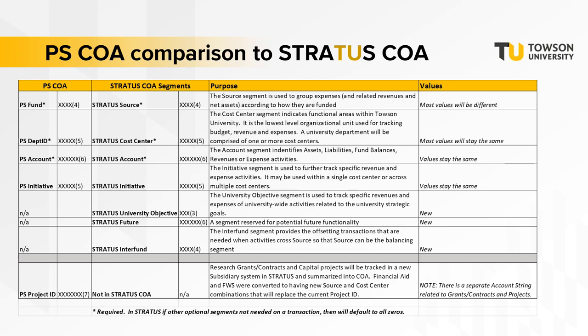Lastly, while most department ID, account, and initiative values will remain the same, most of the values for the current four-digit PeopleSoft fund, which is equated to the four-digit source, will be changing. Take note that one of the biggest changes is to grants, contracts, and projects. The PeopleSoft project ID used today will not be part of the Stratus Chart of Accounts. A new system will be utilized to track all grants and projects. As such, there will be a separate account string that is still being developed that will be used to track and post transactions related to grants and contracts, so stay tuned.